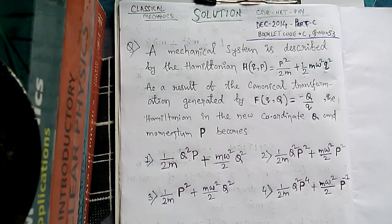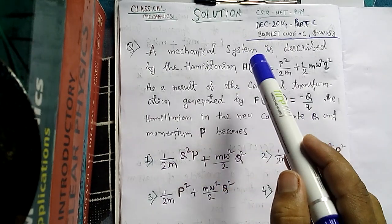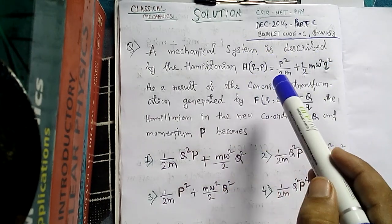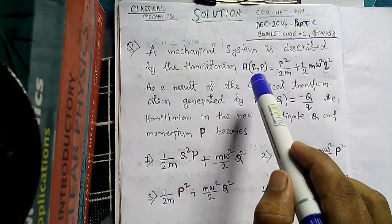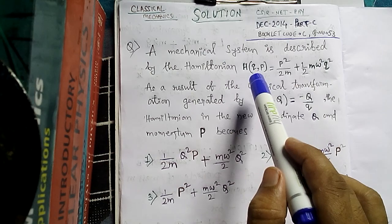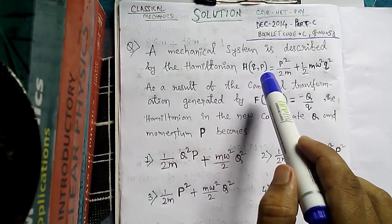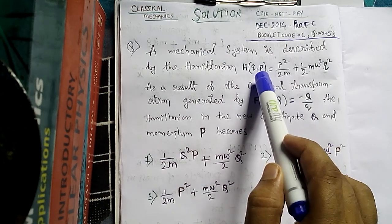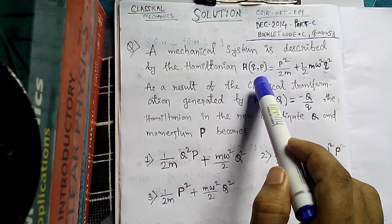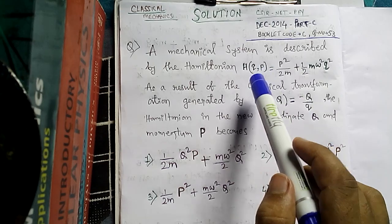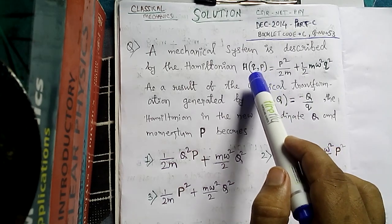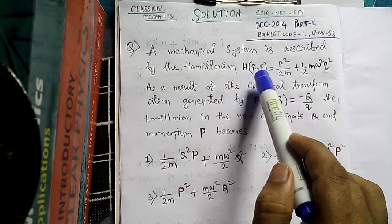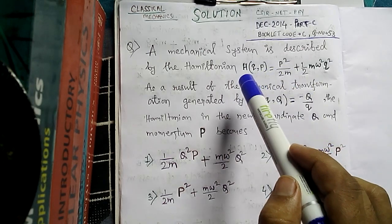Hello friends, this is Vidhan, welcome to my channel. This is a classical mechanics problem from December 2014, Part C, booklet code C, question number 53. It says a mechanical system — a particle — is described by the Hamiltonian H, which is a function of Q and P. Here Q is called the generalized coordinate and P is called the generalized momentum, also called conjugate momentum. Q and P together are called a canonical conjugate pair, written in small letters.